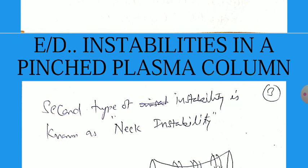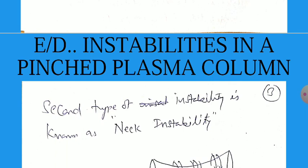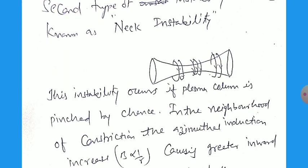The second type of instability is known as neck instabilities, that is just like the flute. What happens in this one? The instability occurs in the plasma column pinched by currents in a neighborhood of constriction.